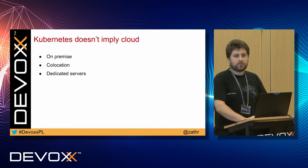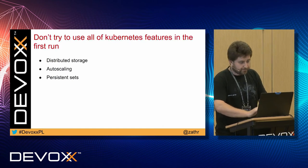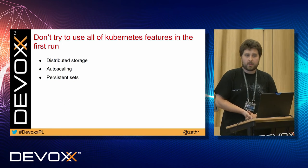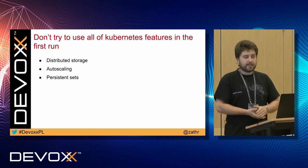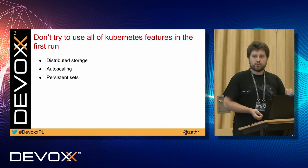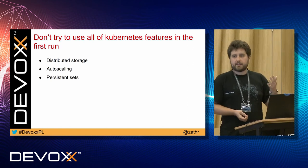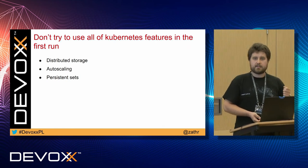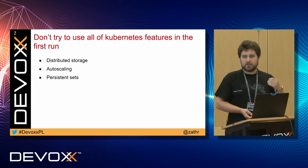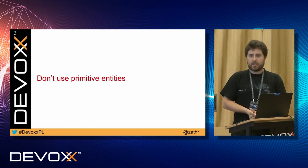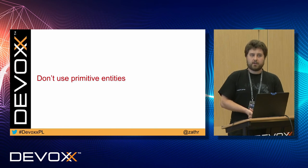You might also be fine with on-premise or co-location and still benefit from other Kubernetes features. You know the saying about how to eat an elephant — the same applies to Kubernetes. Identify and master only the components that are crucial for your deployment. If you start with stateless microservices, you probably don't need distributed storage or persistent sets. In the beginning, you may not even need auto-scaling. Also, do not use primitive entities — don't create a herd of unmanaged pods instead of creating a deployment.